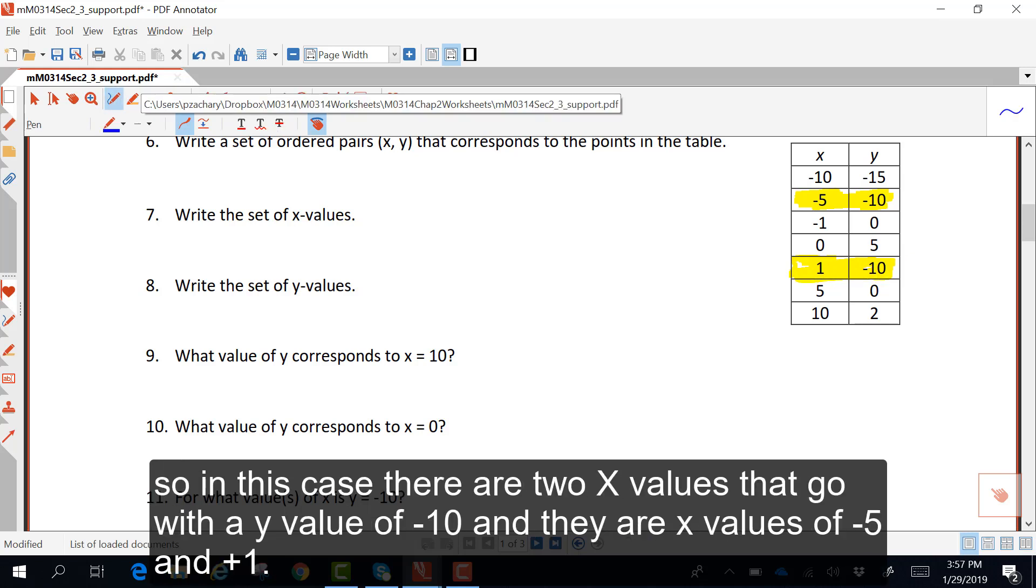So in this case, there are two x values that go with a y value of negative 10, and they are x values of negative 5 and positive 1.